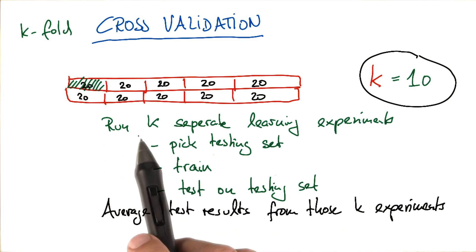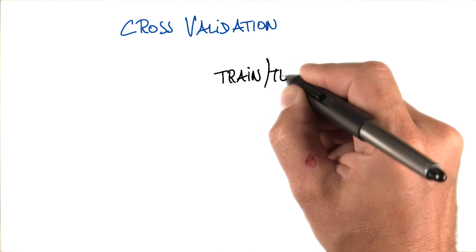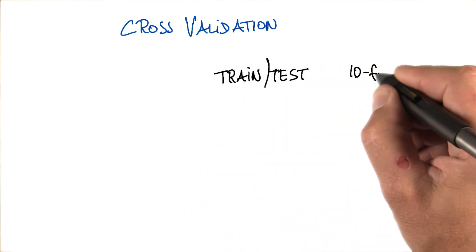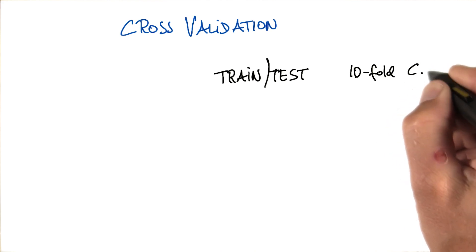So obviously this takes more compute time because you now have to run k separate learning experiments. But the assessment of your learning algorithm will be more accurate. And in a way, you've kind of used all your data for training and all your data for testing, which is kind of cool. Let me just ask one question. Suppose you have a choice to do the static train test methodology that Katie told you about, or you do, say, 10-fold cross-validation CV.